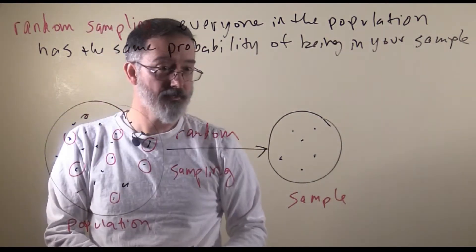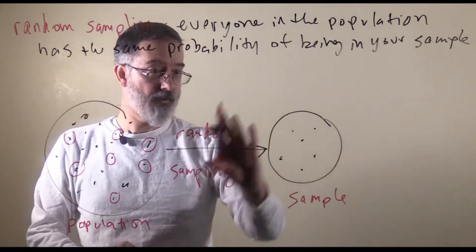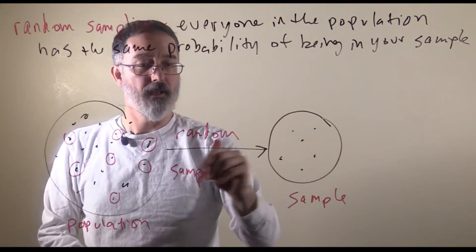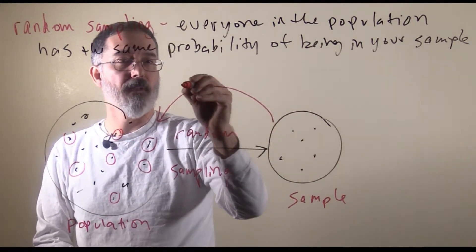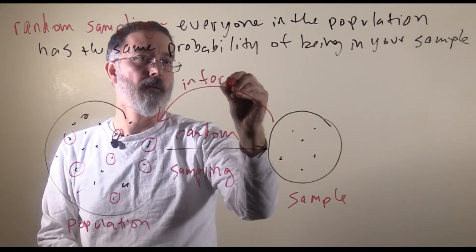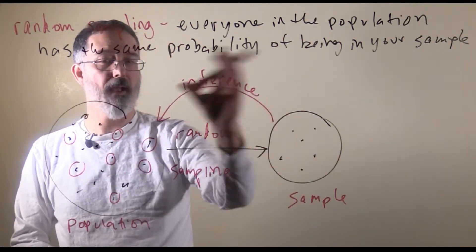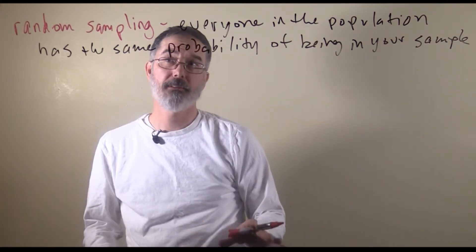Then, what that allows us to do is, once we have our sample, we measure our sample. If it was a random sample, then we can be pretty confident in our inferences from our sample back to our population.